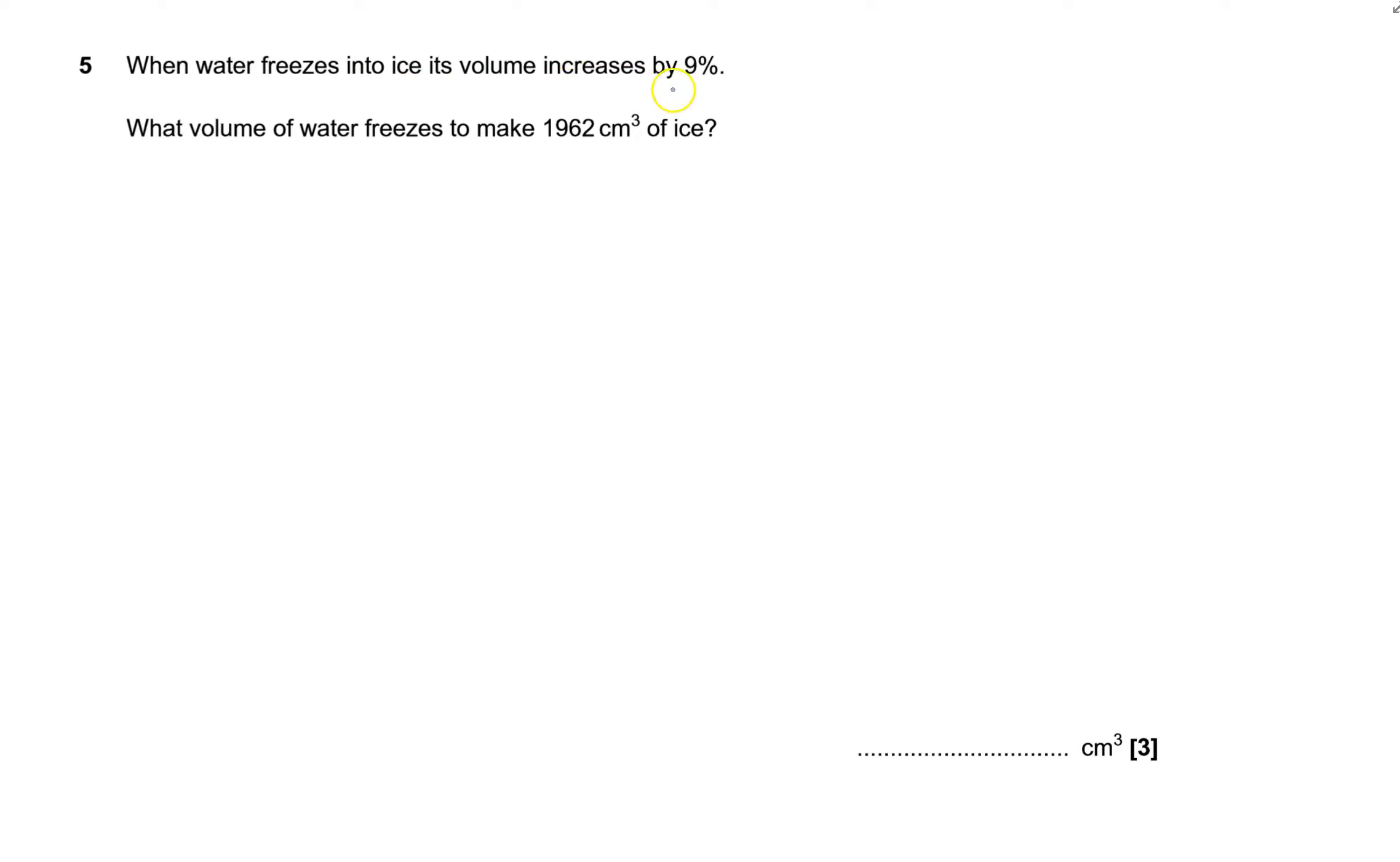When water freezes into ice its volume increases by 9 percent. What volume of water freezes to make 1962 cm³ of ice? Well this is actually a reverse percentage question.